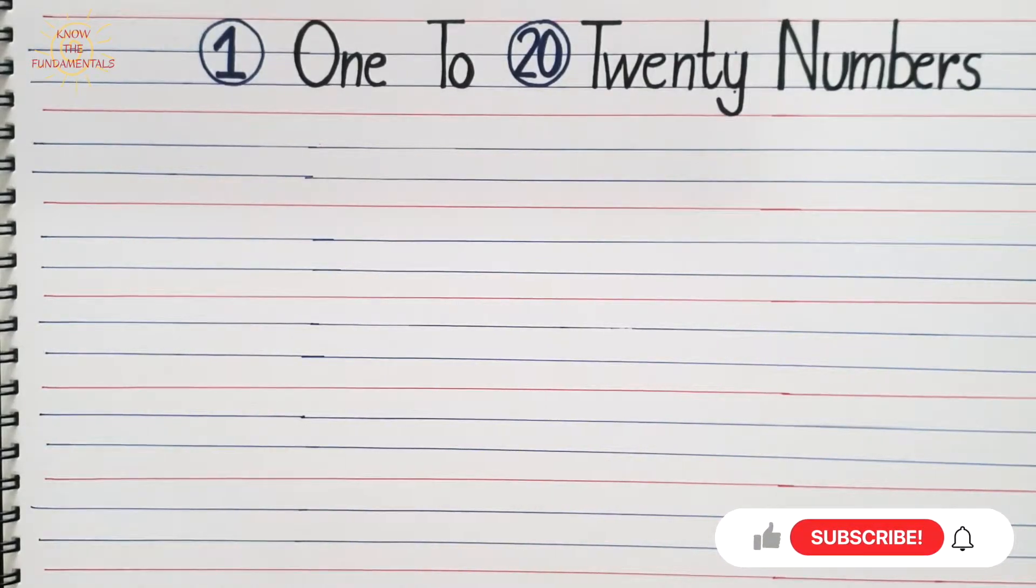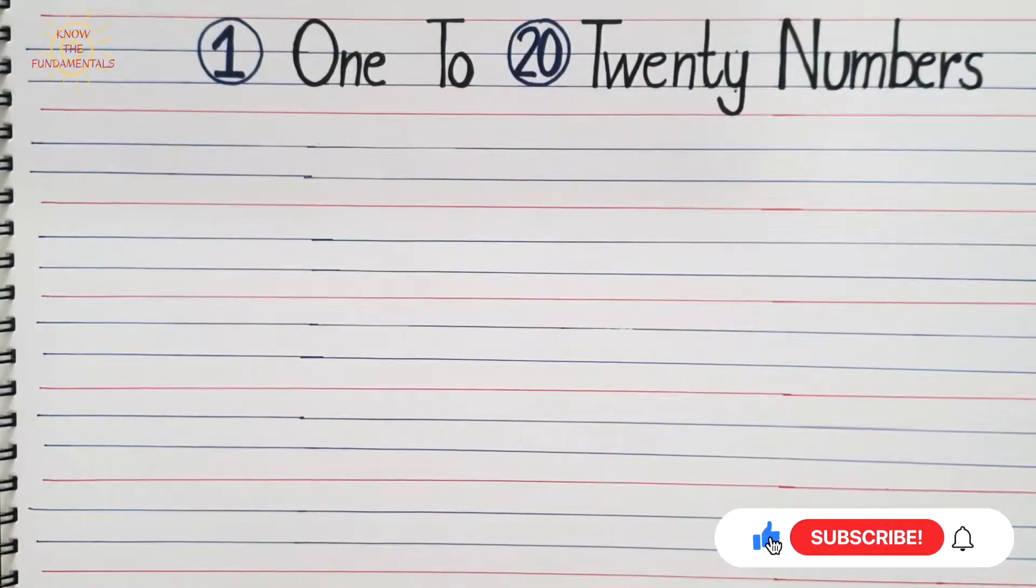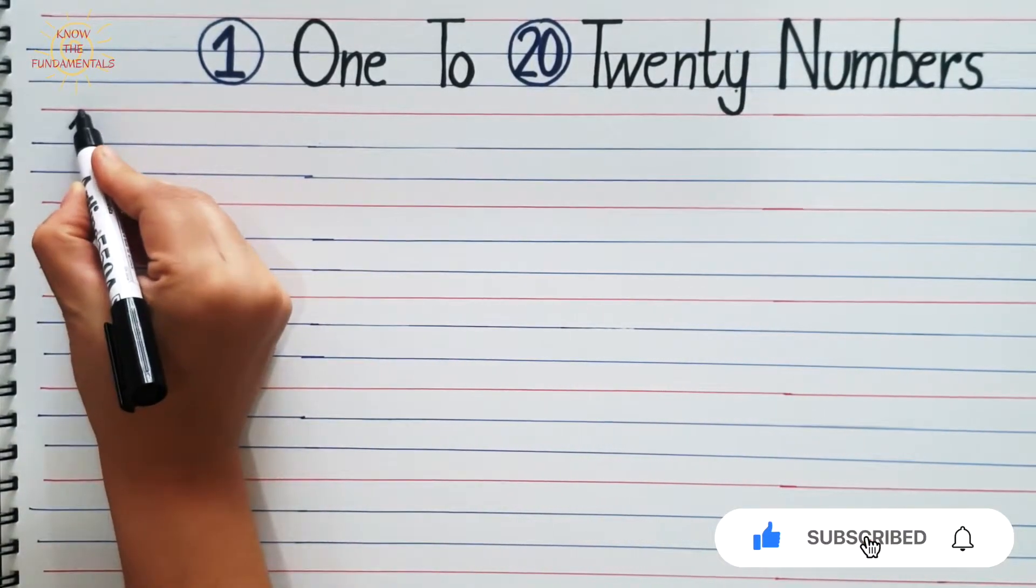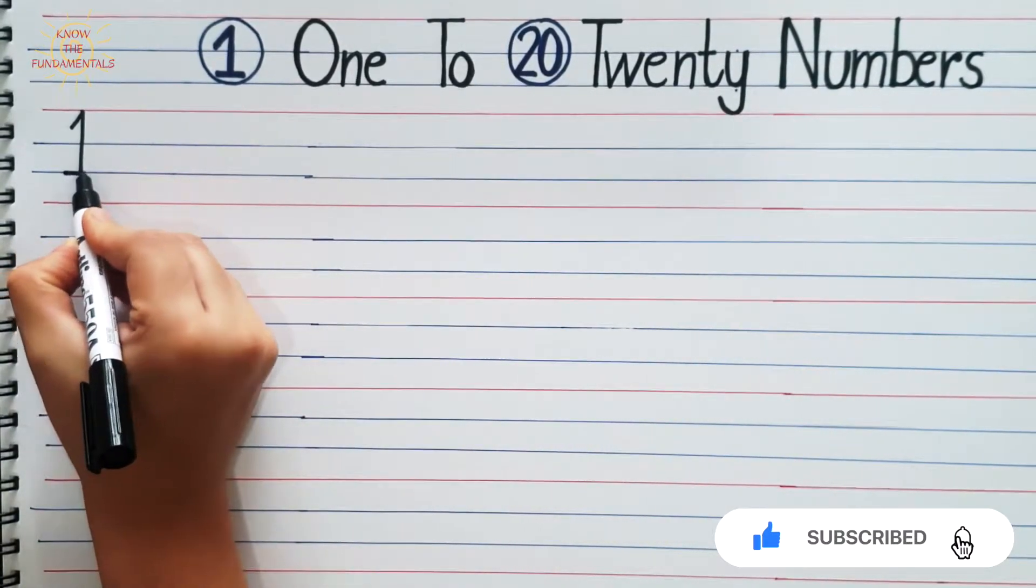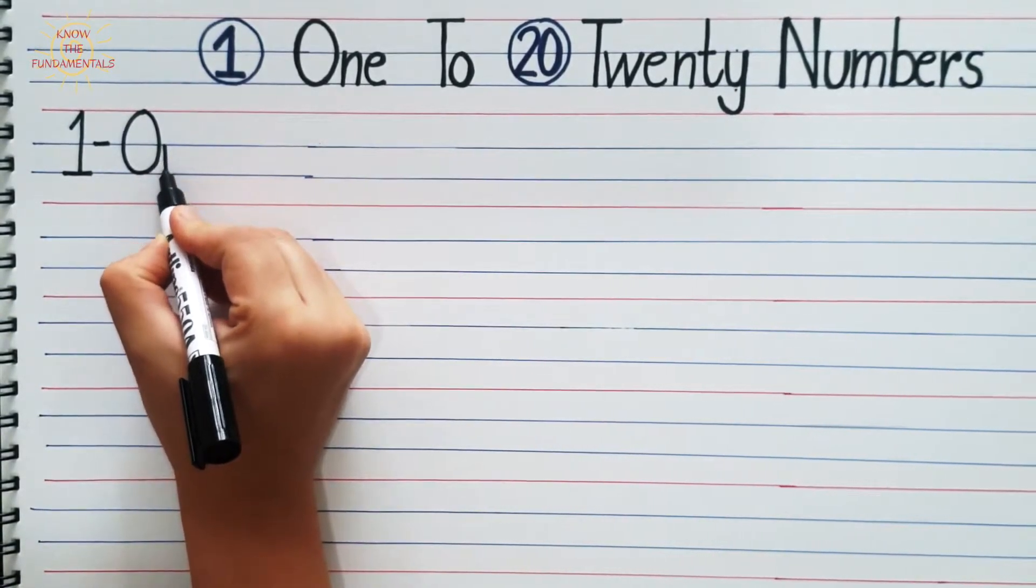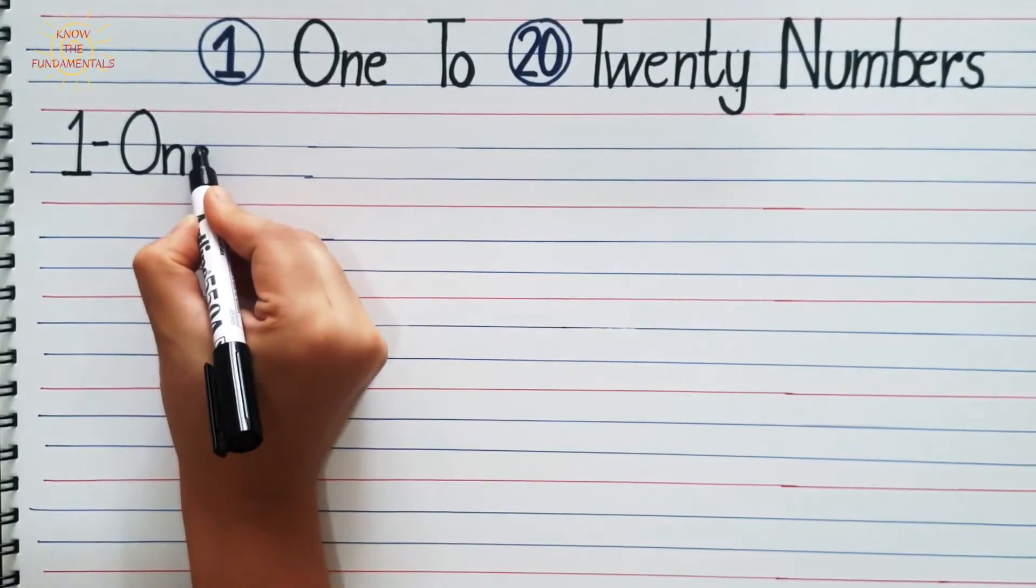Hello kids, today we will learn how to write number names from 1 to 20 in four lines. 1, O, N, E.